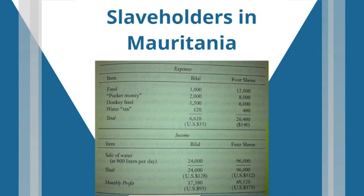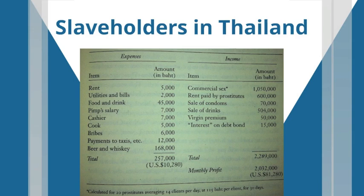In Thailand, which probably has the largest profit margin on investments in slaves, a brothel can easily expect to make — as you can see from this chart — over 800% return on their investments.